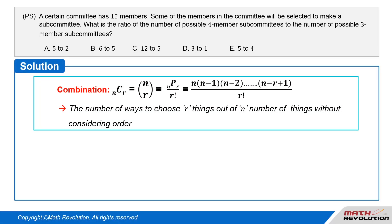Definition of a combination: A combination is defined as the number of ways to choose r number of things out of n number of things without considering the order of the elements. n choose r is equal to nPr over r factorial, which is equal to n times (n minus 1) times (n minus 2) and so on till (n minus r plus 1) over r factorial.